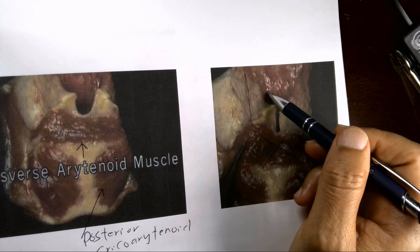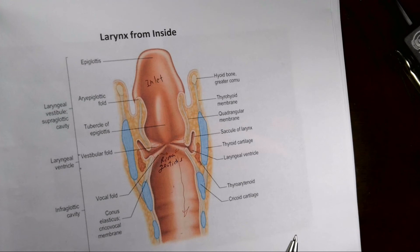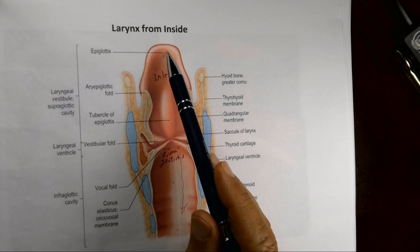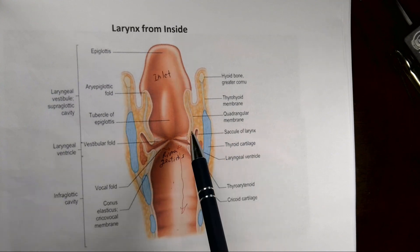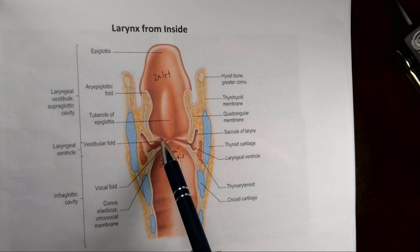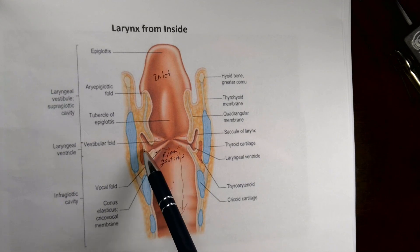This is the inside of the larynx. If we take a section inside the larynx, we can divide it into three parts: the inlet, which extends from the epiglottis down to the vestibular fold; then the ventricle, the narrow space between the vestibular fold and the vocal cord, which extends laterally to form the saccule.